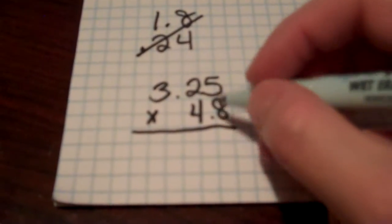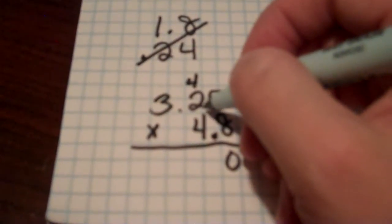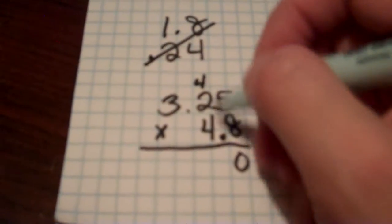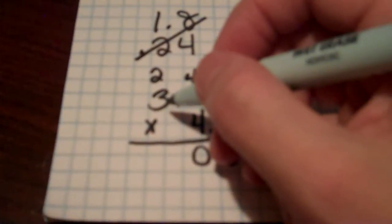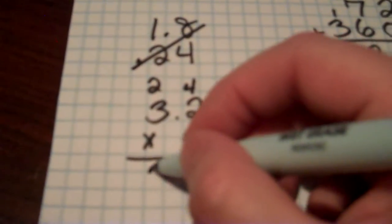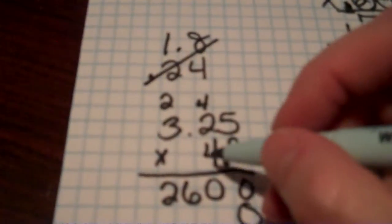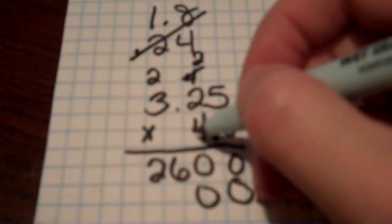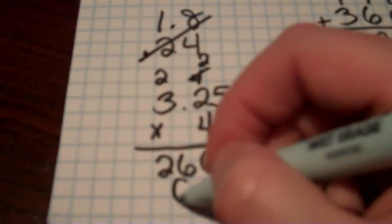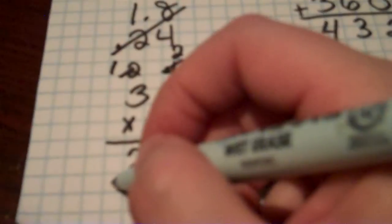8 times 5 gives me 40. 8 times 2 is 16 plus 4 gives me 20. 8 times 3 is 24 plus 2 should give me 26. Placeholder 0. 4 times 5 is 20. 4 times 2 is 8 plus 2 more is 10. 4 times 3 is 12 plus 1 is 13. So I'm going to add these up.